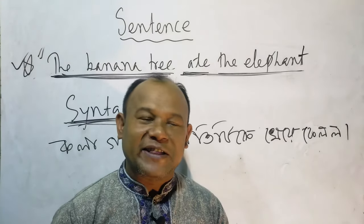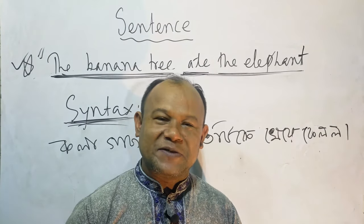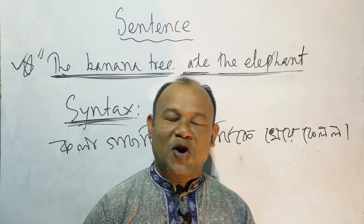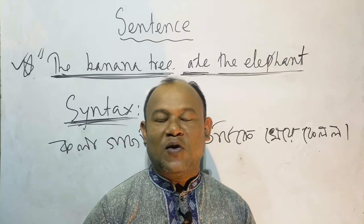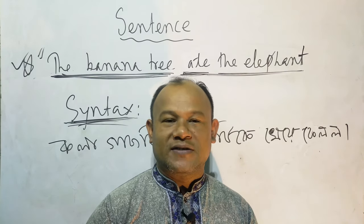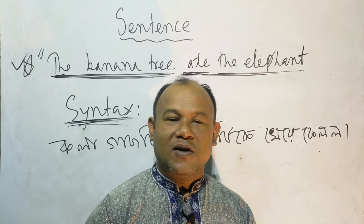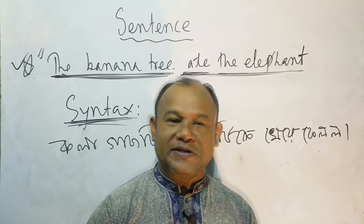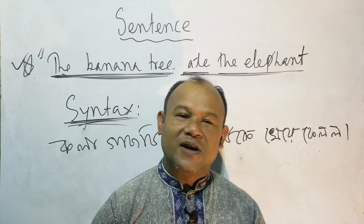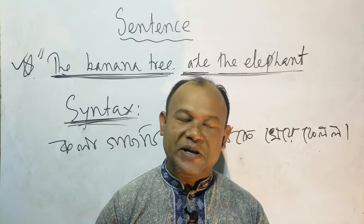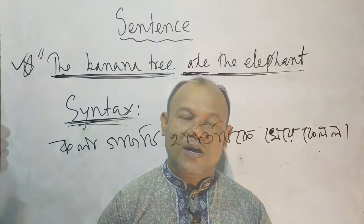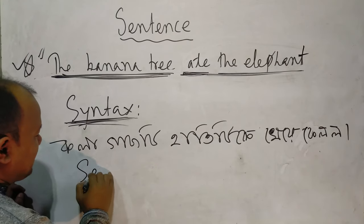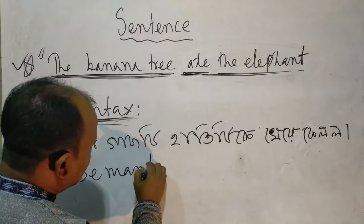Now, what is called semantics? Semantics is the study of meaning of words, phrases, or sentences of a language. It also gives dictionary-based meanings. So we can say the sentence 'the banana tree ate the elephant' has the characteristics of semantics.